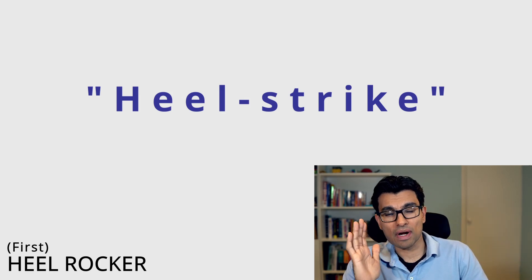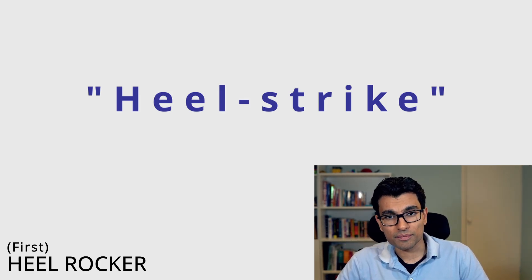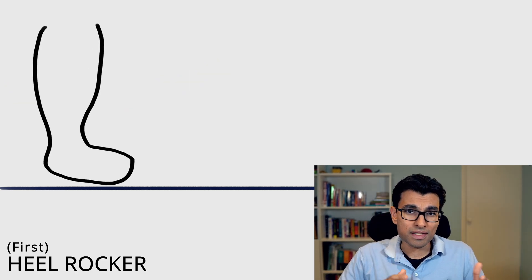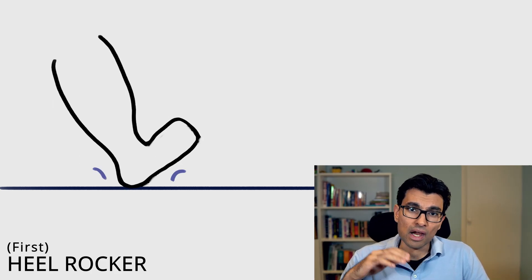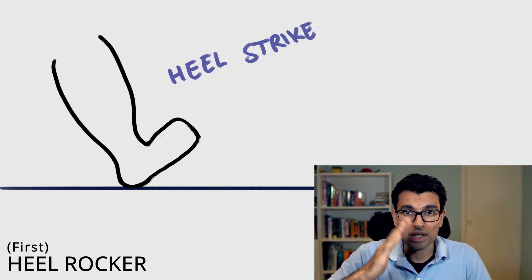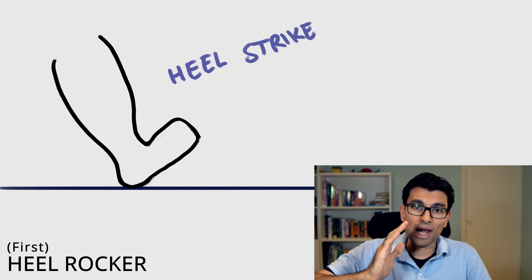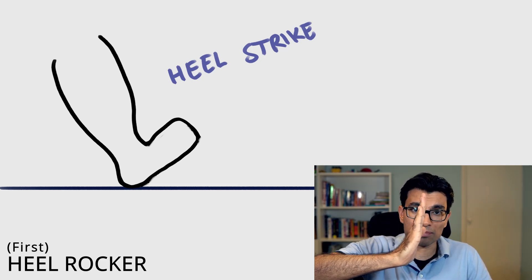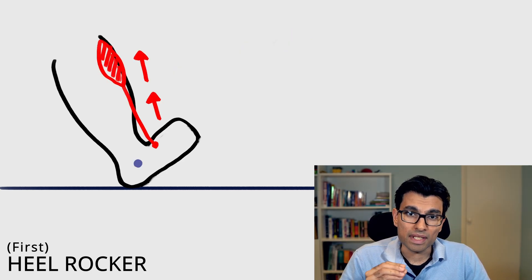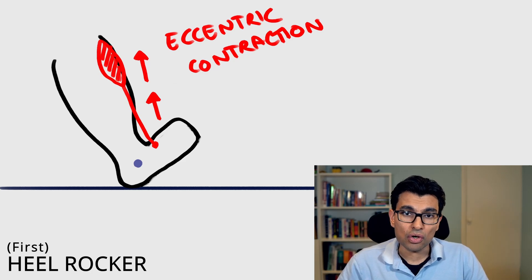I'll go through each rocker in turn, describing what it is, the exact movement that occurs, the control of that movement, and potential problems if it goes wrong. The first is the heel rocker — what happens when the heel first makes contact with the ground, also called heel strike. At this time, the toes are in the air and the ankle is dorsiflexed, which helps stop the foot catching on the ground during terminal swing. For the body to progress forward, the rest of the foot must make contact with the ground by controlling the ankle moving from a dorsiflexed to a neutral or even plantar flexed position.